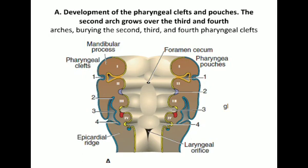In this diagram you can see the first pharyngeal cleft, which will form the external auditory meatus and tympanic membrane. Here you can also see the cervical sinus, which will disappear.